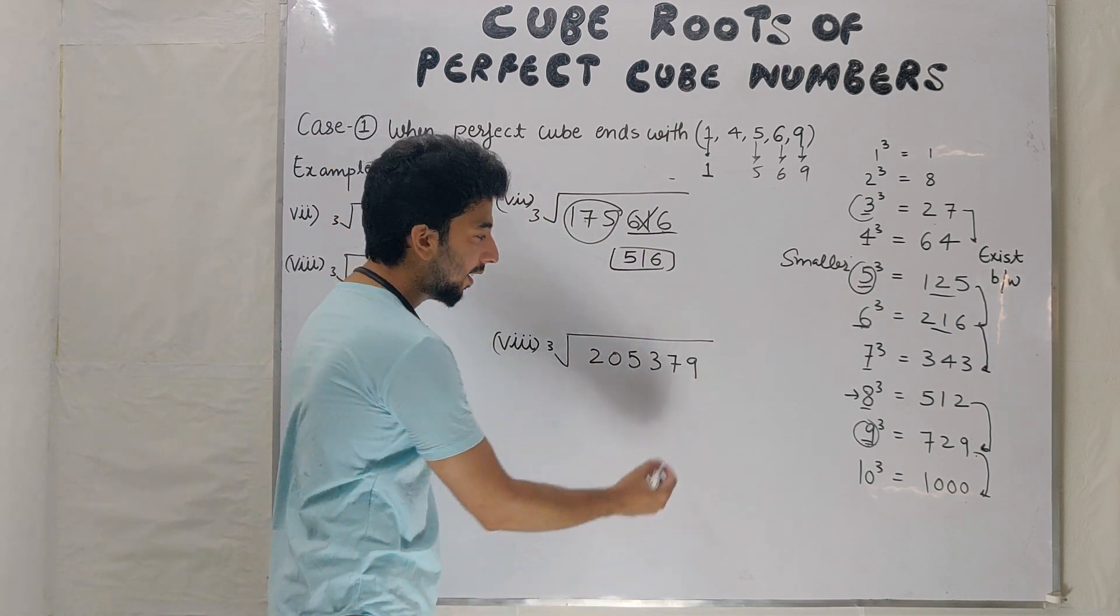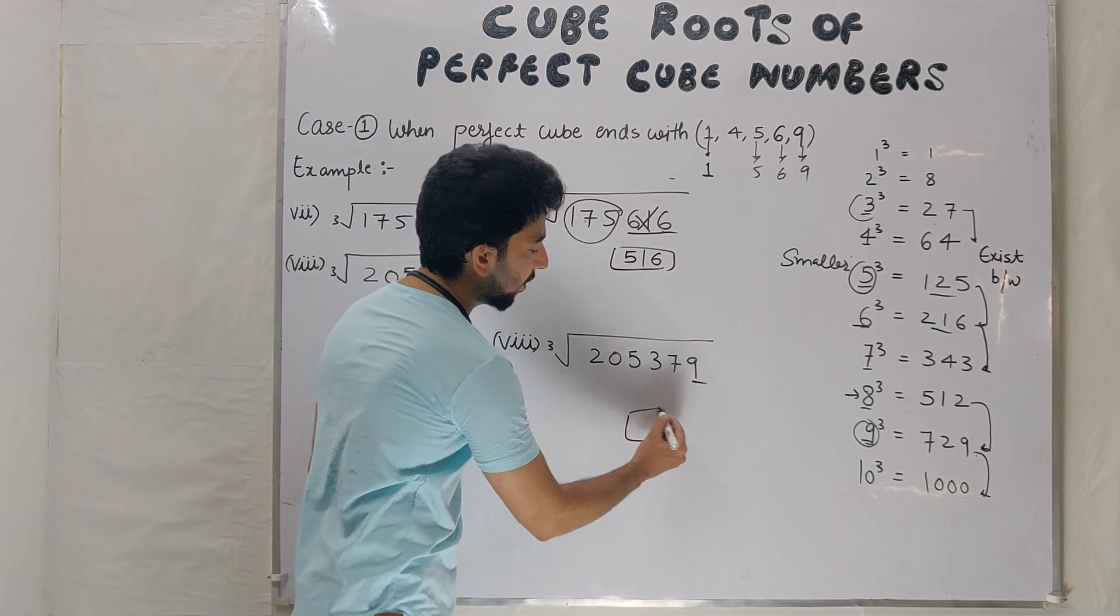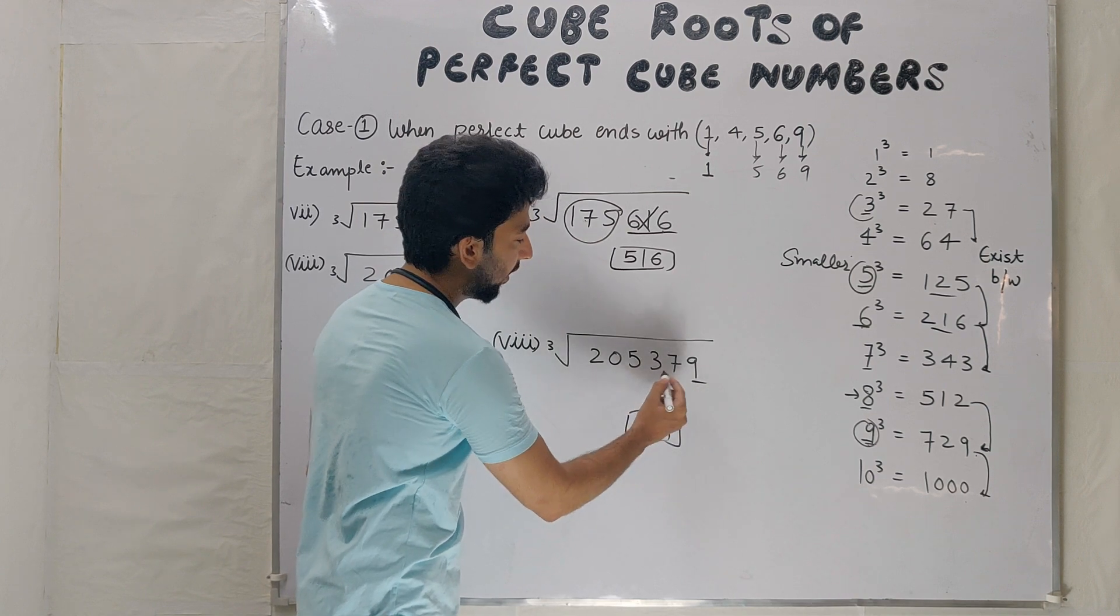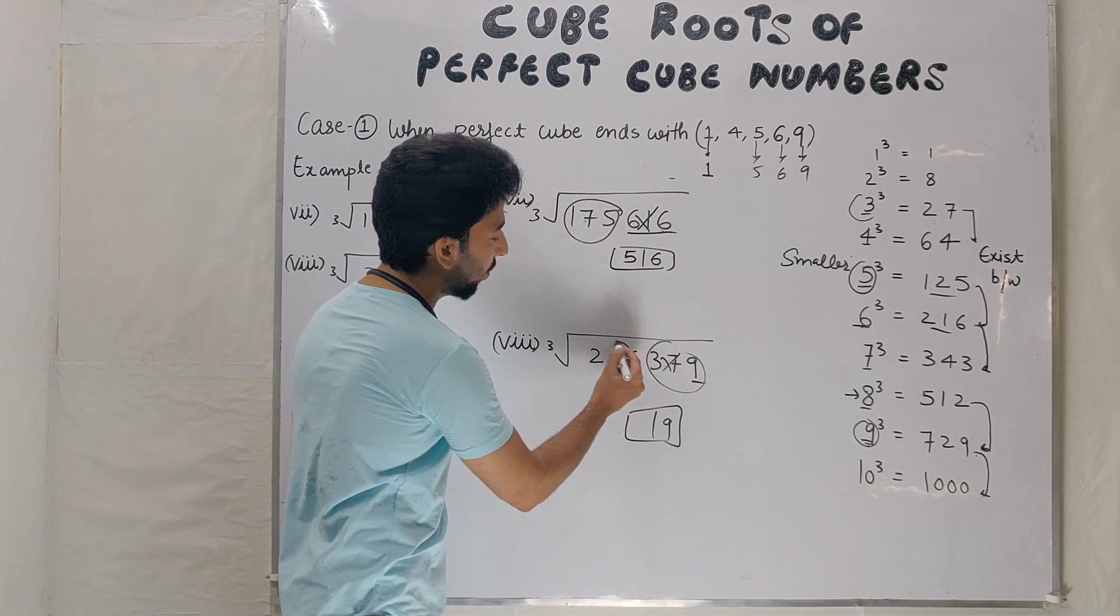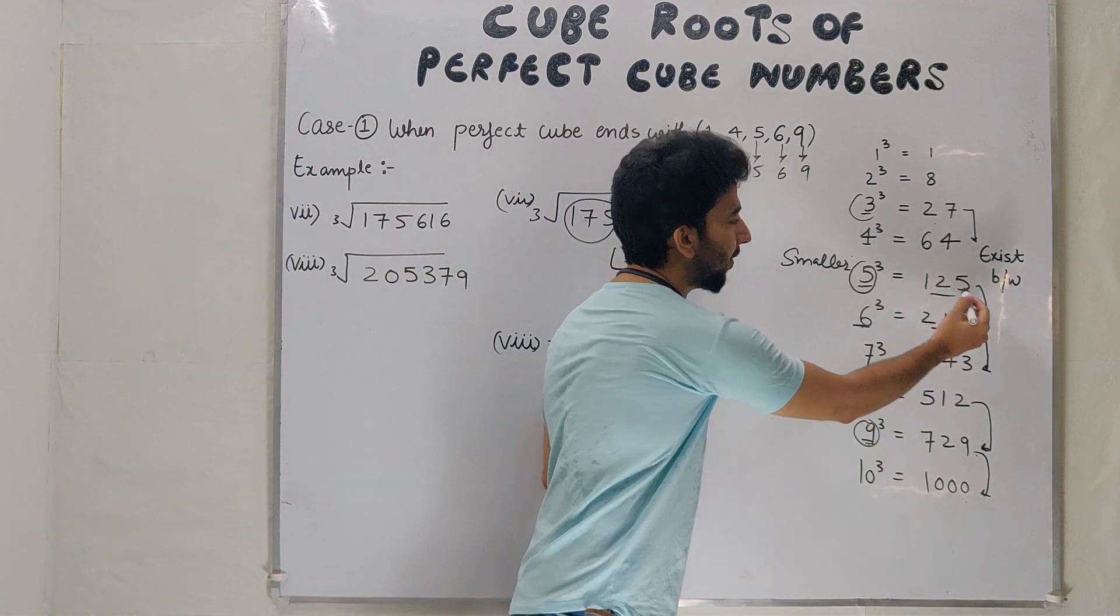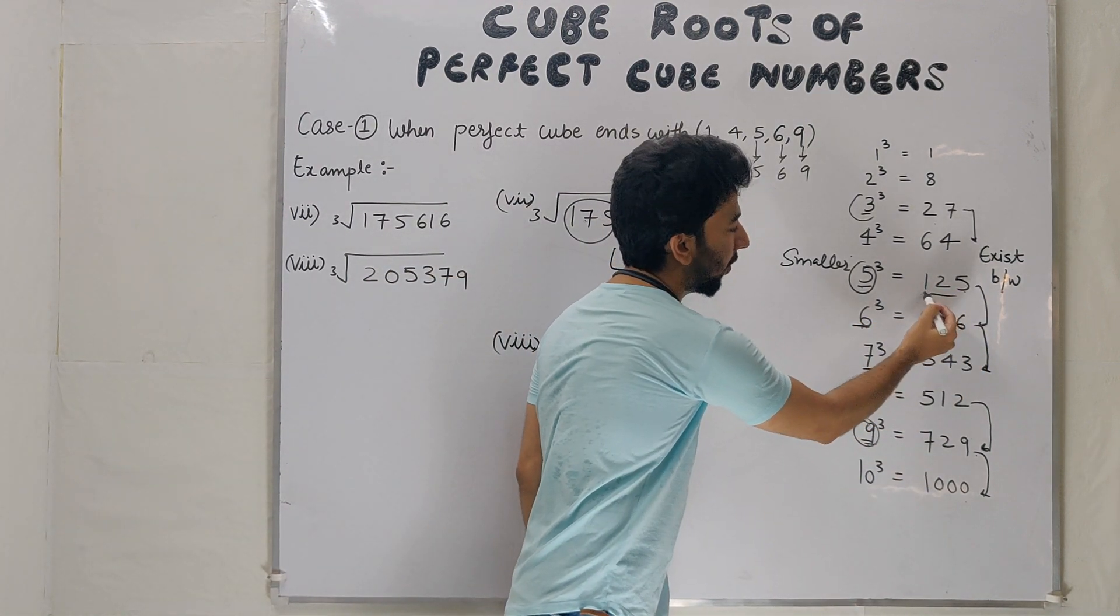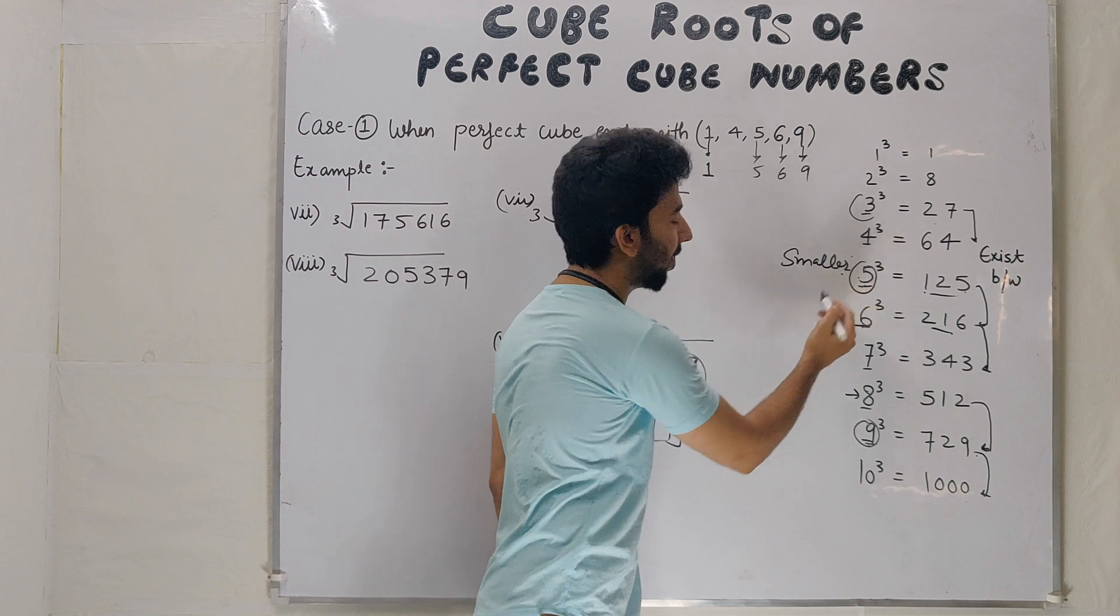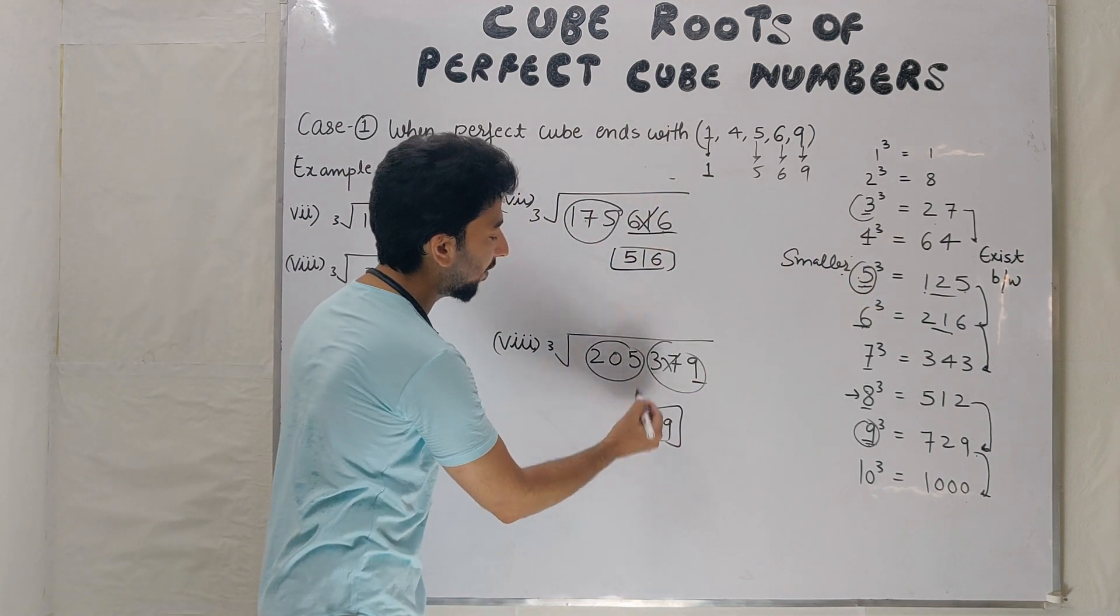Example number 8: ends with 9, unit place 9. Cancel cancel, 205. Between 125 and 216, 5 and 6, smaller one is 5, answer is 59.